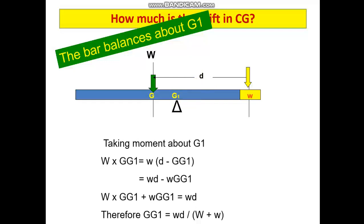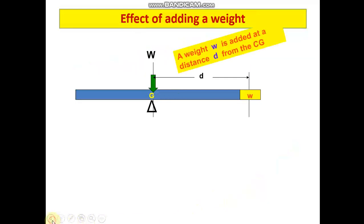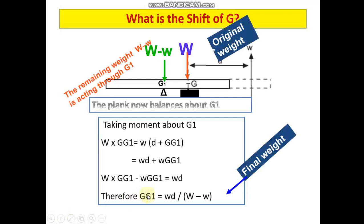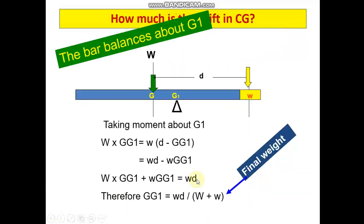How do we find out this GG1? Same formula: we take moment about G1. We have W times GG1 on the left-hand side equal to w times the distance d minus GG1 on the right-hand side. This balancing expression, when we simplify, gives us the final formula: GG1 equals w times d divided by W plus w. You can see the basic difference from the previous slide: here it is negative sign in the denominator, and here it is positive sign in the denominator.